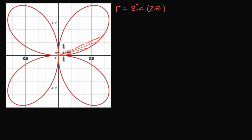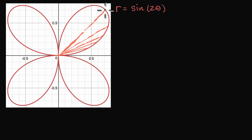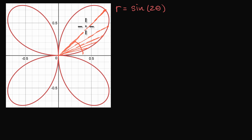We could keep going all the way. What happens when theta is equal to pi over four? Well, sine of two times pi over four is sine of pi over two, so r is equal to one — we reach a kind of maximum r there. And then as theta increases further, our r once again starts to get smaller and smaller.